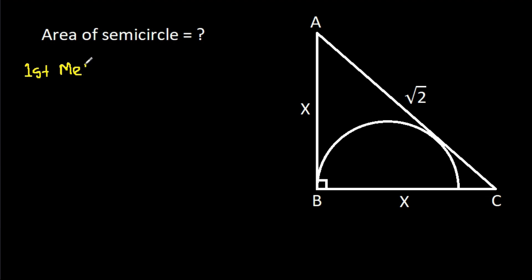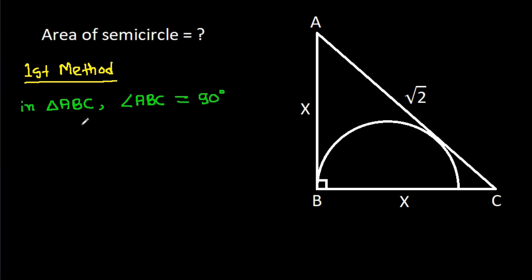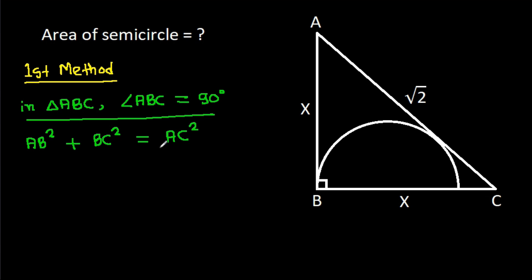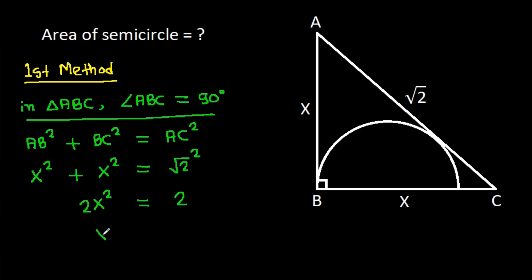The first method: in triangle ABC, angle ABC is 90 degrees. So AB squared plus BC squared equals AC squared. AB is x squared, BC is x squared, and AC is root 2 squared. So 2x squared equals 2, meaning x squared equals 1, and x equals 1.